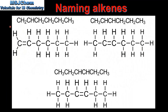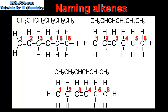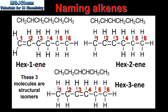Next we look at alkenes with six carbon atoms in the longest carbon chain. Starting with the molecule on the left, the carbon to carbon double bond is between carbon number one and carbon number two. In the molecule on the right, the double bond is between carbon number two and carbon number three. In the third example, the double bond is between carbon number three and carbon number four. So they are named hex-1-ene, hex-2-ene, and hex-3-ene. Note that hex-4-ene does not exist — instead it is named hex-2-ene.